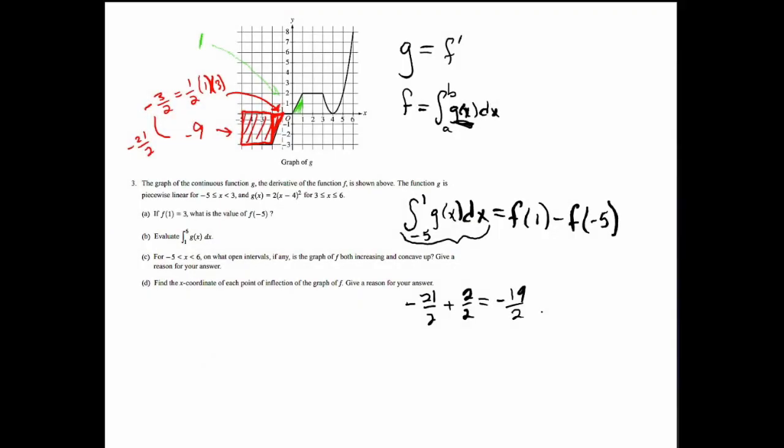So I get negative 19 halves. Geometry comes in handy. Negative 19 halves equals f(1) minus f(-5). f(1) is 3, minus what we want to find, f(-5). I want to solve for this. I'm a positive person, so I'd add this over to that side and this over to that side. That would leave you with f(-5) equals 3 plus 19 over 2. You could leave it like this on the AP, or it's pretty easy to make this 6 over 2 plus 19 over 2, which is 25 over 2. And that is our final answer for part A.